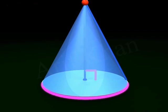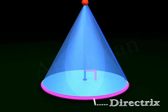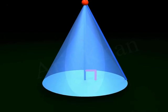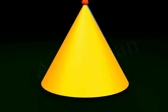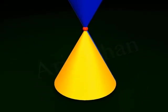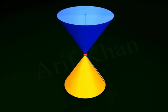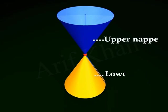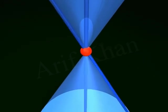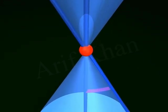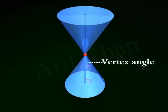The perimeter of the base is called the directrix. The lateral surface of a right circular cone is called a nap. A double right circular cone has two naps. The nap above the vertex is called the upper nap, and that below the vertex is called the lower nap. Also, the angle between the generator and the axis is called the vertex angle.